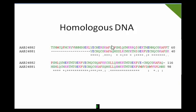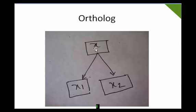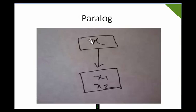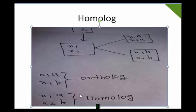That's all about ortholog, paralog, and homolog. To repeat with a short statement: ortholog means a species is divided into two species but there is a common ancestor — that is called ortholog. When a species is duplicated but the new genes remain conserved within the same species — that is called paralog.